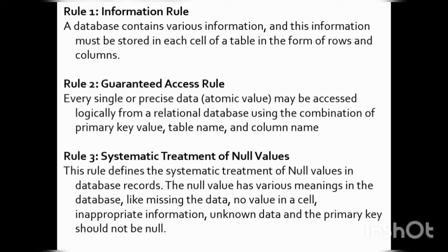The first rule is the Information Rule. A database contains various information and this information must be stored in each cell of a table. All information must be present in tabular format — that is, in rows and columns format. This is the Information Rule: all data in a relational database must be stored in tabular format.